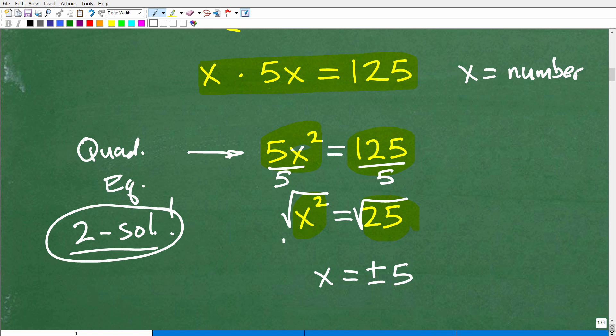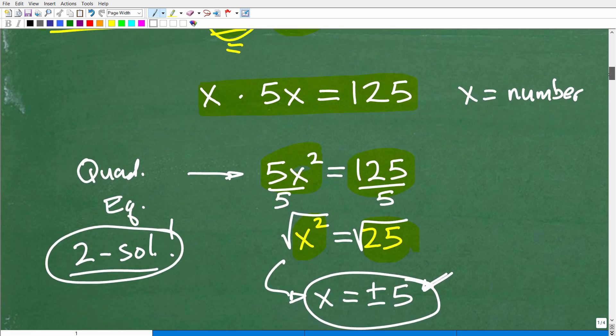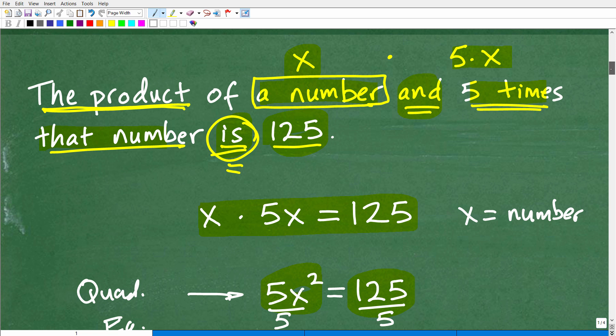Now I can simply just take the square root of both sides of the equation. So the square root of X squared is X and the square root of 25 is both a positive and negative five. So that's why we have two answers to this, okay, two answers and both positive five and negative five would work, okay, in terms of satisfying this particular problem, okay? The product of a number and five times that number is 125.